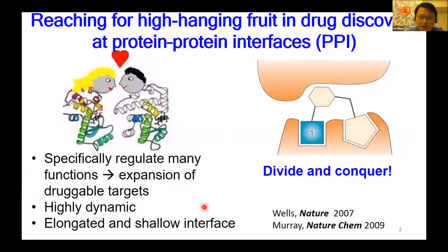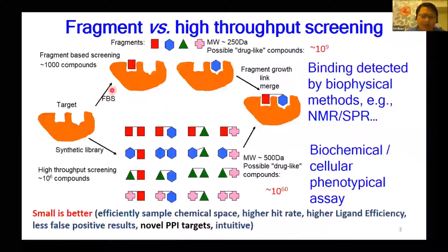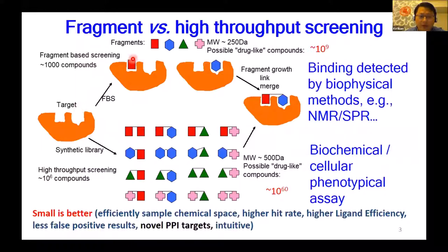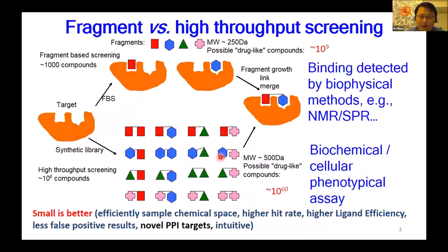The challenge is that protein-protein interactions are intrinsically highly dynamic and have a long, elongated, and shallow interface which are difficult for a drug to cover. The feasible strategy is called divide and conquer. The general idea is that if we cut the binding pocket in half and screen each sub-cavity individually, we only need to sample a chemical space of around 10^9 compounds with a molecular weight of around 250.